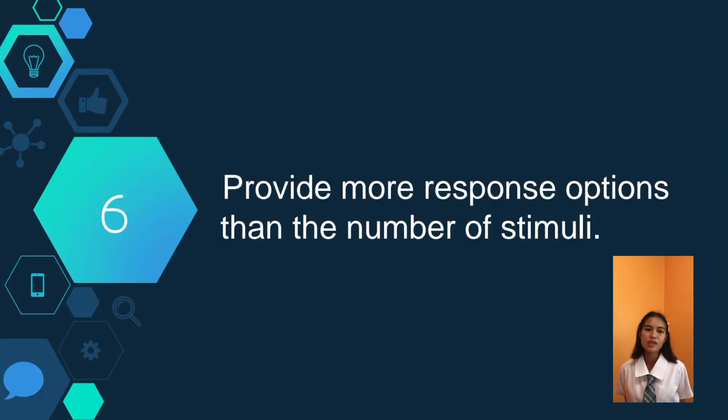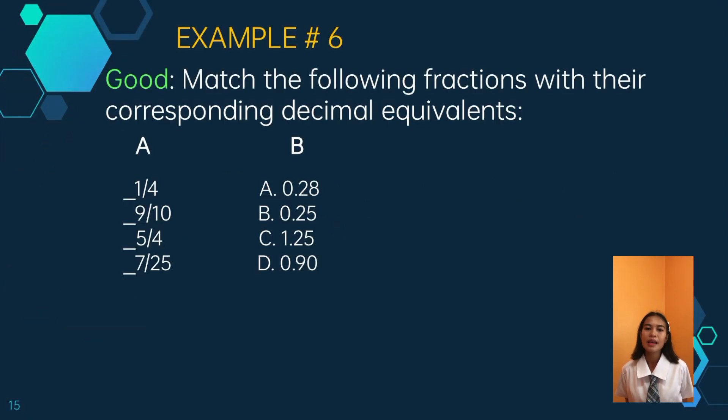The last guideline is to provide more response options than the number of stimuli. Example, match the following fractions with their corresponding decimal equivalents. One-fourth is equal to 0.25. This example includes the same number of response options as that of the stimuli, thus making it more prone to guessing.